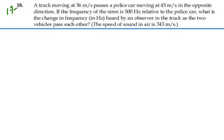Here's problem number 1718. A truck moving at 36 meters per second passes a police car moving at 45 meters per second in the opposite direction. If the frequency of the siren is 500 hertz relative to the police car, what is the change in frequency heard by an observer in the truck as the two vehicles pass each other? The speed of sound in air is 343 meters per second.